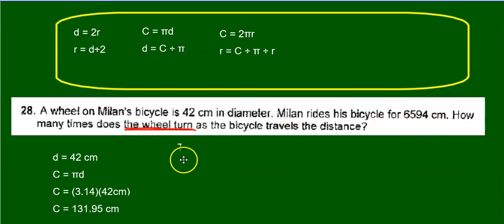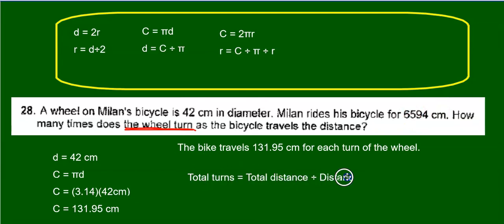So we know that the bike travels 131.95 centimeters for each turn of the wheel. So we just have to divide. The total number of turns is going to be the total distance divided by the distance for each turn. So the total distance divided by the distance for each turn, that's going to be 6,594 divided by 131.95.